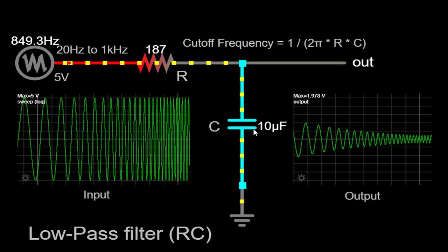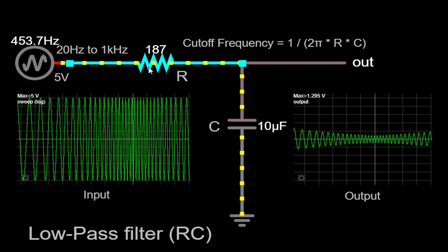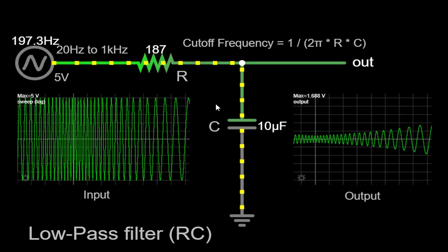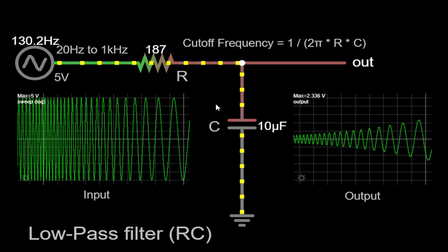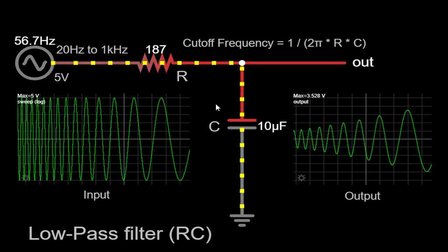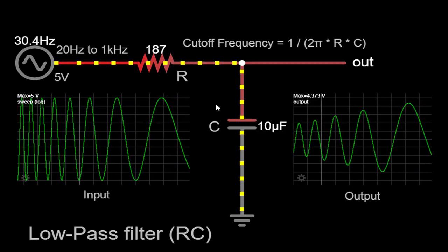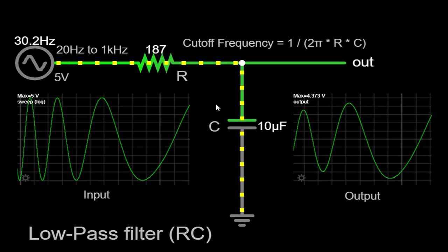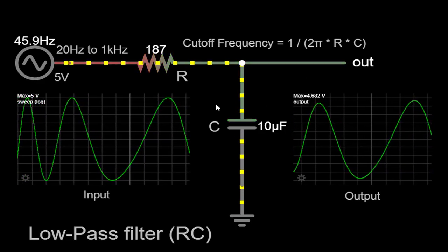The voltage drop across the capacitor, in combination with the resistor in the circuit, forms a voltage divider. This voltage divider proportionally attenuates the higher frequency components of the input signal, while allowing the lower frequency components to pass with minimal attenuation. Consequently, the output signal exhibits a gradual decrease in amplitude as the frequency increases.